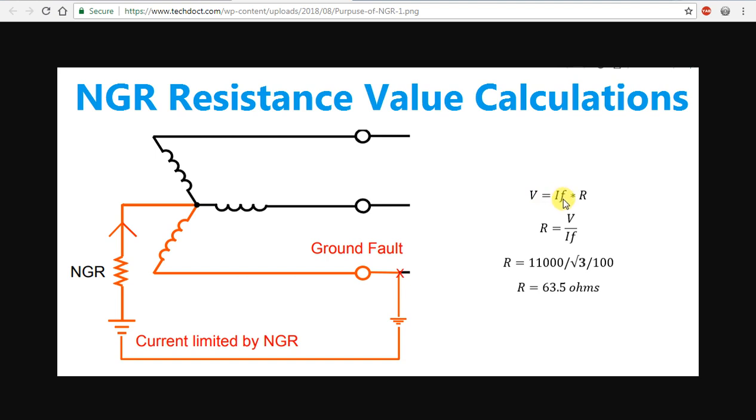That is the resistance and the full load capacity. If we have the maximum value of current, we will calculate the resistance value R. This is the Ohm formula: V = IR.